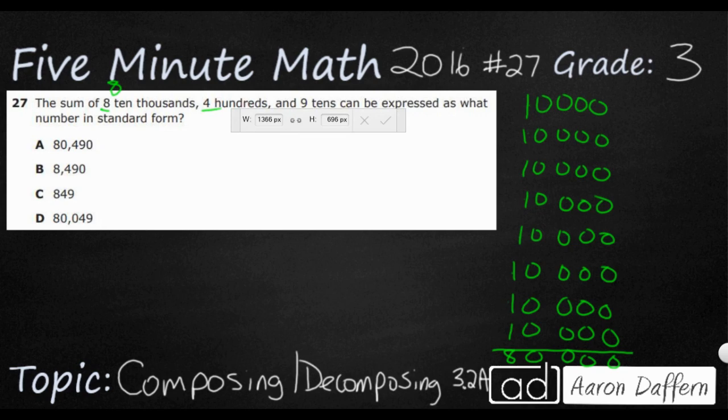Instead of continuing to do that for the hundreds and the nine tens, we're just going to say, okay, so that's eighty thousand. I'm going to write that underneath here, eighty thousand. So I've got my eighty thousand, and then I've got four hundred, so that's one hundred, two hundred, three hundred, four hundred. So I'm just going to write four hundred underneath here.